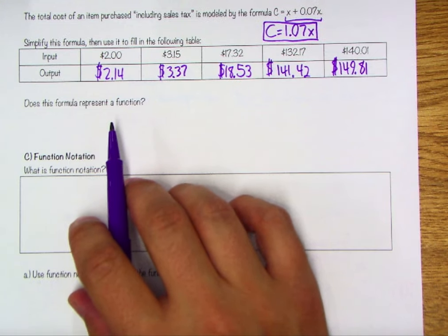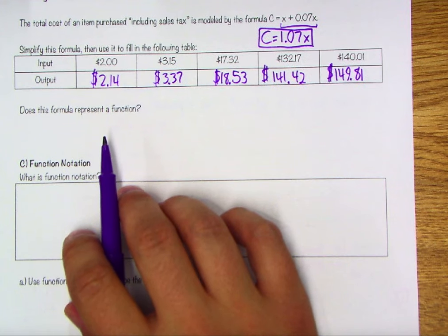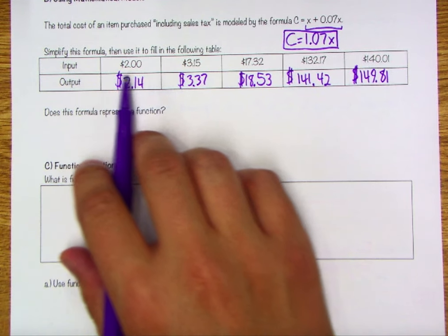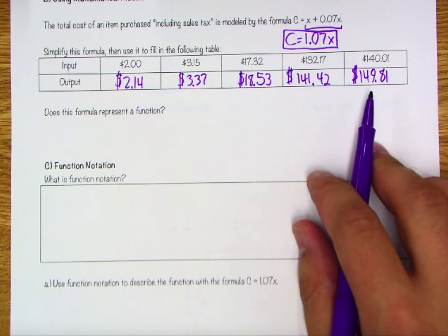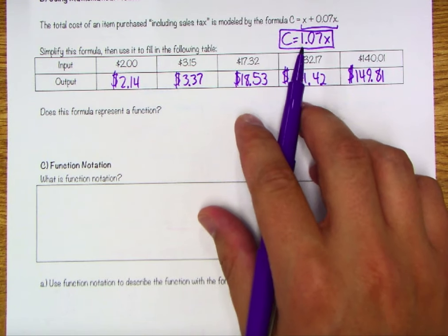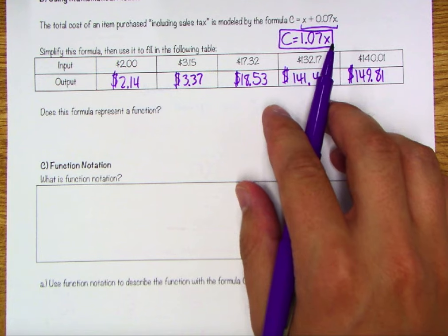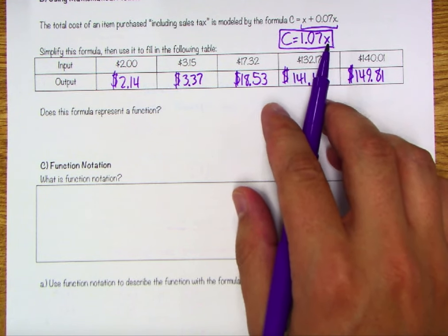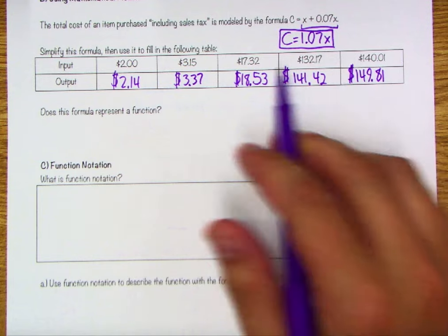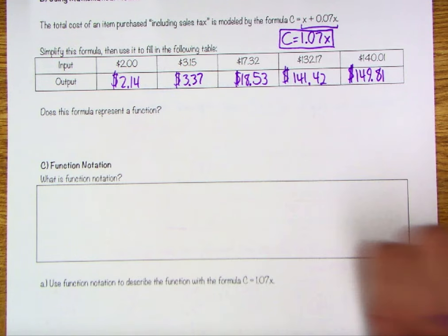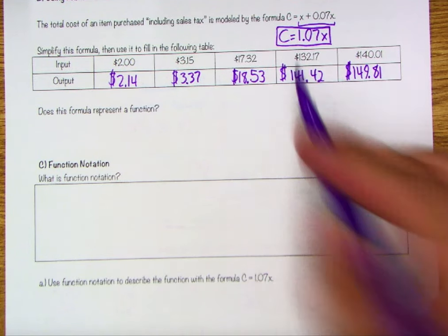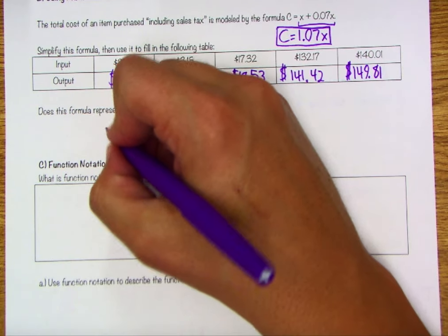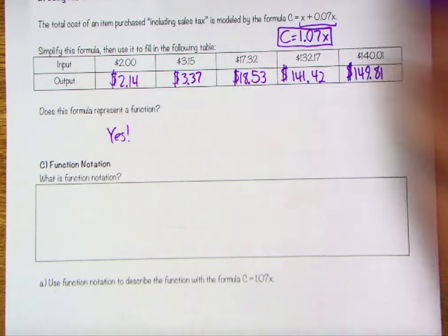Does this formula represent a function? Going back to how we defined a function — for any input, you can only ever get one output. If I multiply by a constant, any number I plug in will only ever give one result. Therefore each value I plug in will only ever have one output. That's the nature of linear functions with some slope. So yes, this formula absolutely does represent a function.